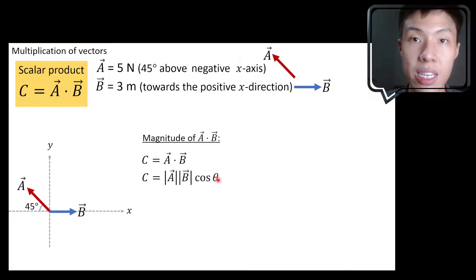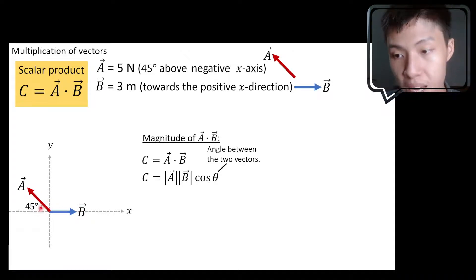So the θ here, again to remind all of you, θ here represents the angle between two vectors. So our two vectors, here is vector A and vector B, and if you want to find the angle between them, this should be the angle between them, not 45 degrees, but 180 minus 45 degrees.